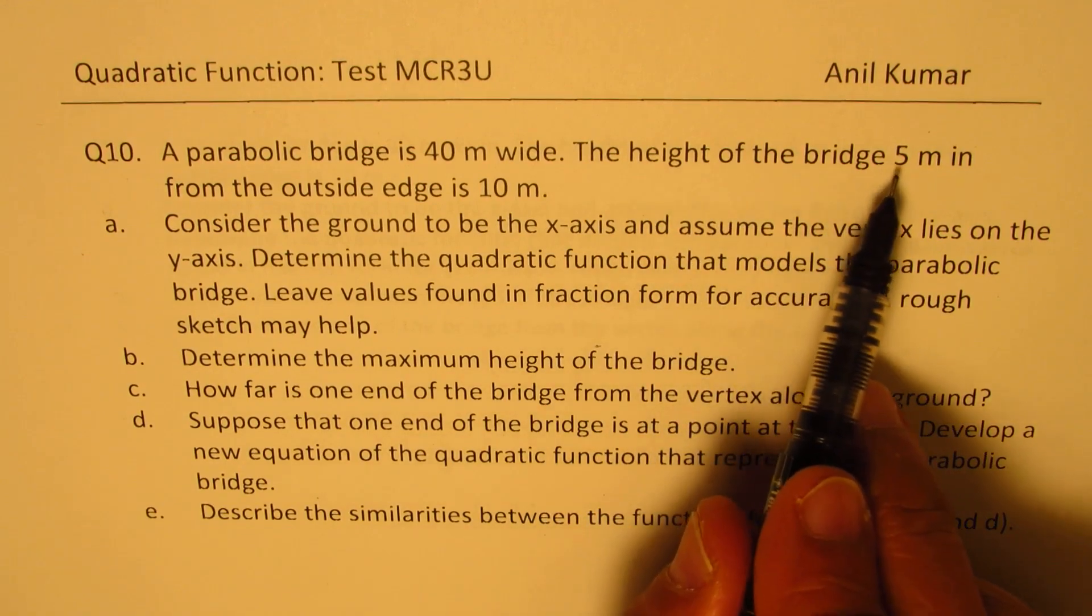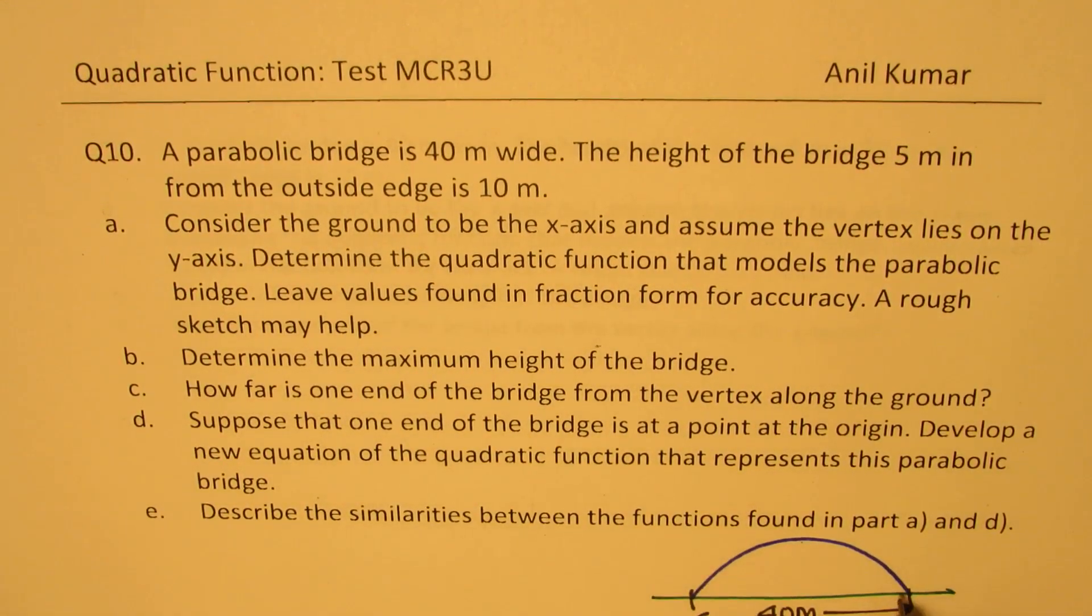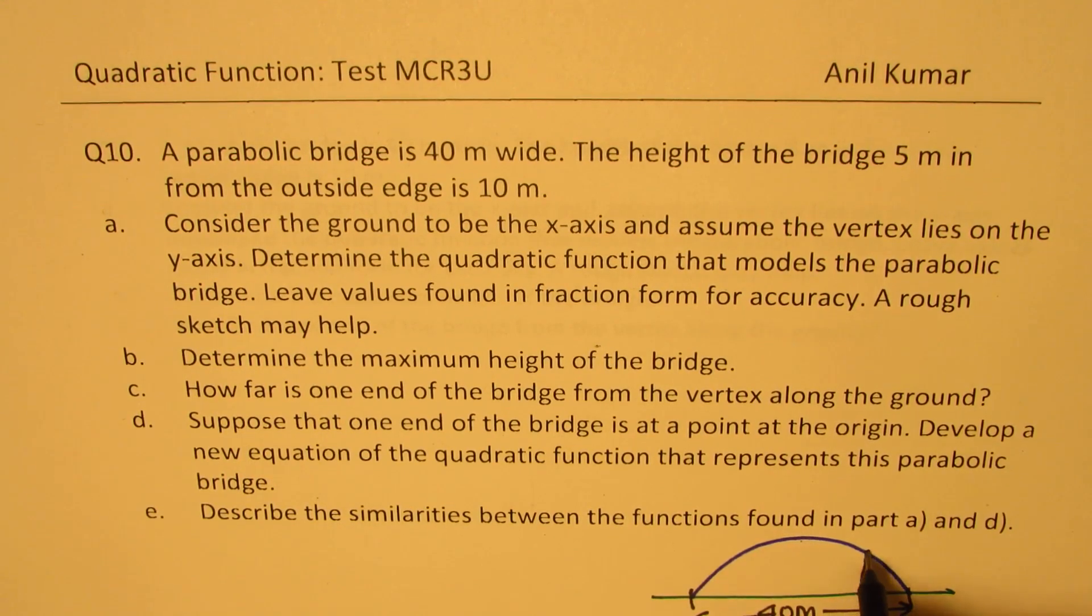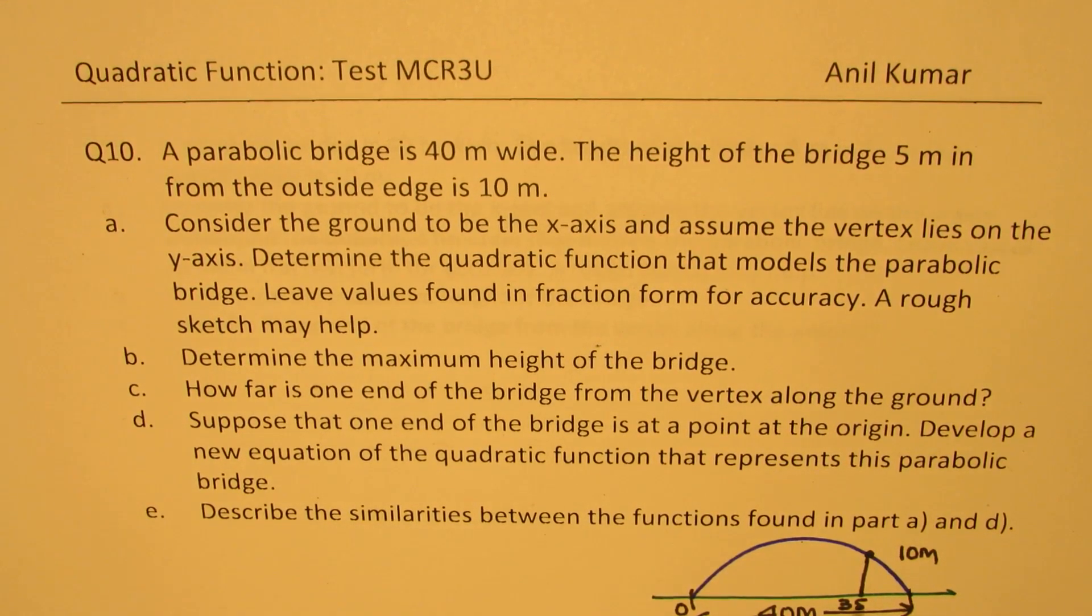The height of the bridge 5 meters in from outside edge is 10 meters. That means if you move 5 meters in from here the height is 10 meters. So this point here is 10 meters high, right, and 5 meters less. That means this is 35 if I'm taking this as 0, right. You understand the situation. So that is what it means.